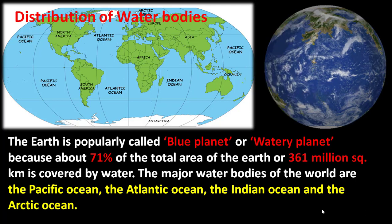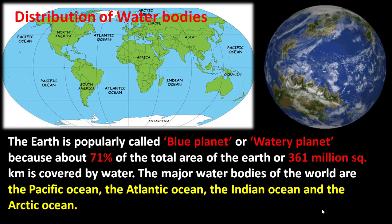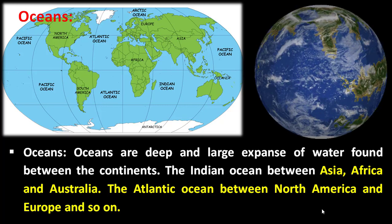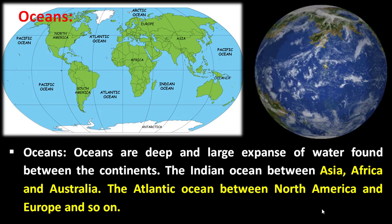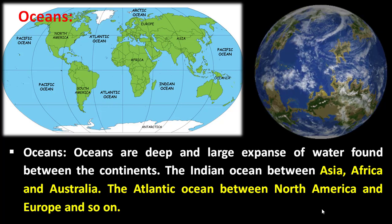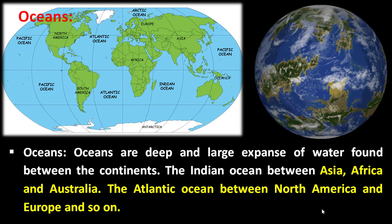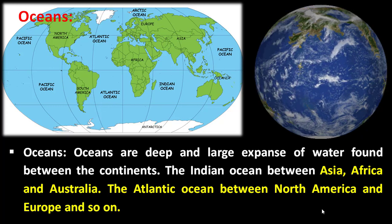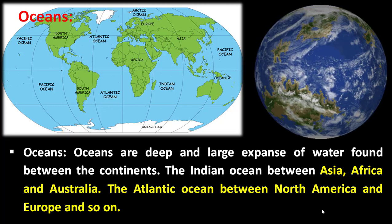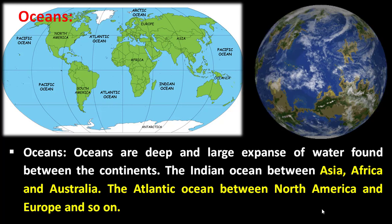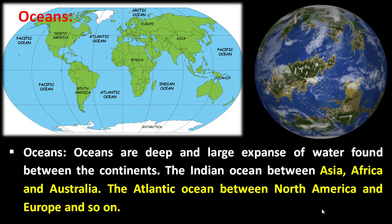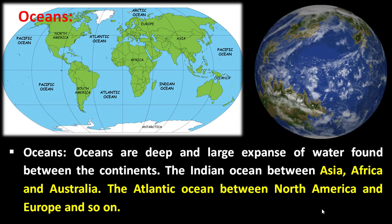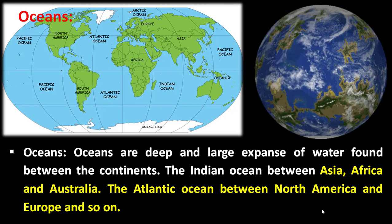The concept of oceans: oceans are deep and large expanses of water found between the continents. For example, the Indian Ocean is found between Asia, Africa, and Australia. The Atlantic Ocean lies between North America and Europe. These are considered as oceans.